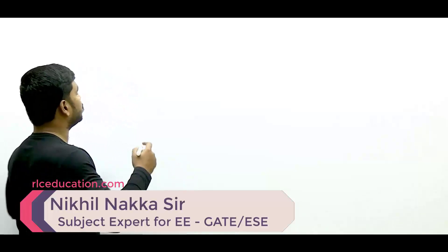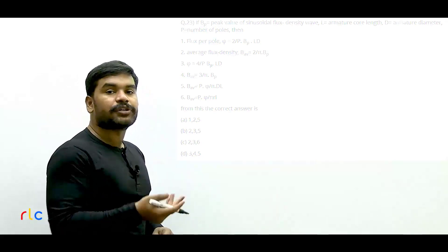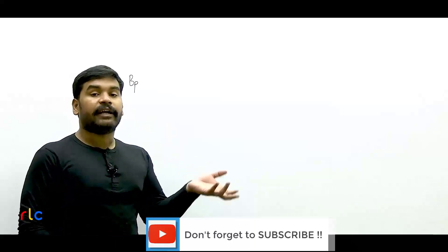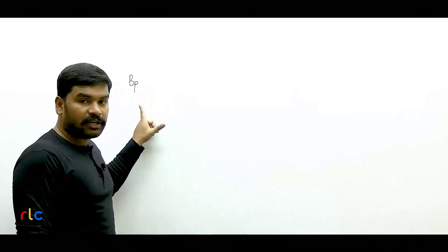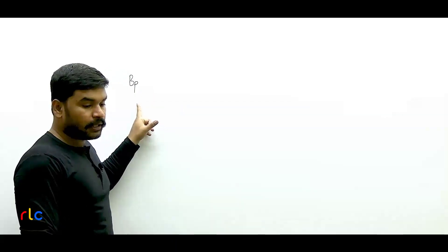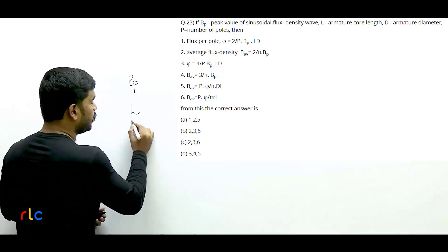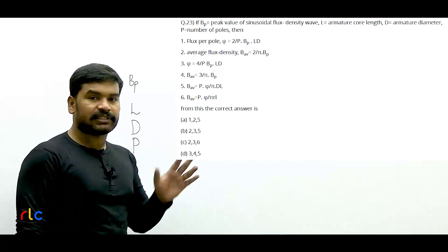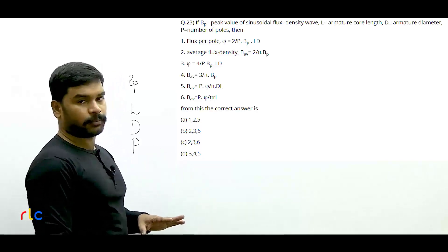Look at the 23rd question. It says that Bp is the peak value of the sinusoidal flux density. There is some rotating electrical machine and every rotating electrical machine has got its own air gap. In that air gap, the flux density is distributed sinusoidally — Bp is the maximum value of that sinusoidal flux wave. L is the length of the armature core, D is the diameter of the armature core, and P is the number of poles. He has given 6 formulas, and out of those you have to identify which is right and which is wrong.